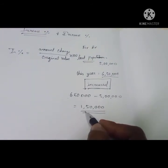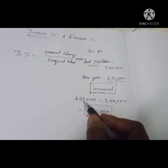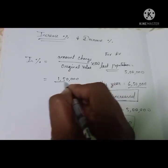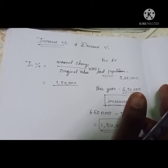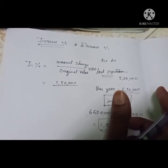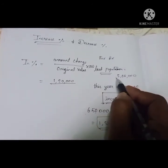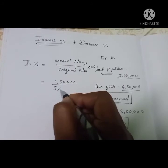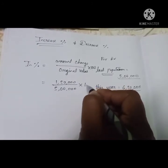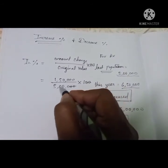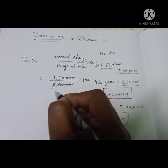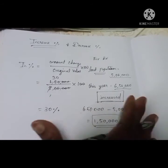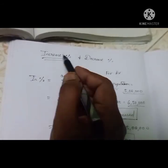Here, the amount of change is 1 lakh 50,000 and the initial value is 5 lakhs. So increase percentage equals 1,50,000 divided by 5,00,000 multiplied by 100, which gives 30 percent. This is how we find increase and decrease percentage.